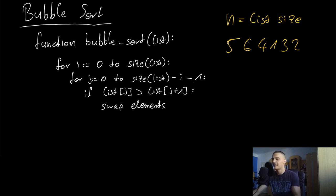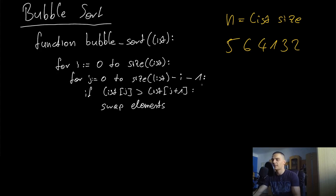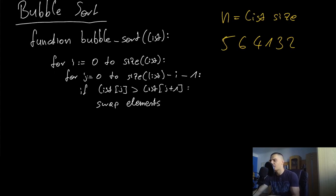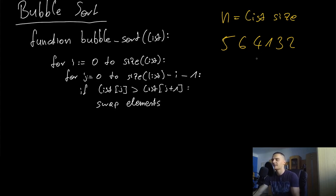The minus one accounts for the fact that we compare each element to the next one. We don't compare the last element to anything — we stop one position before the end. Inside the inner loop, we compare adjacent elements: if element at j is larger than element at j+1 — for example, comparing five to six — we don't swap. But if six is larger than four, we do swap.